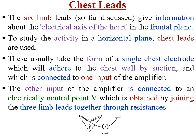The second set of leads is called the chest leads. The six limb leads discussed so far give information about the electrical axis. The chest leads usually take the form of a single chest electrode which adheres to the chest wall by suction and is connected to one input of the amplifier. The other input of the amplifier is connected to an electrically neutral point V, which is obtained by joining the three limb leads together through resistance.